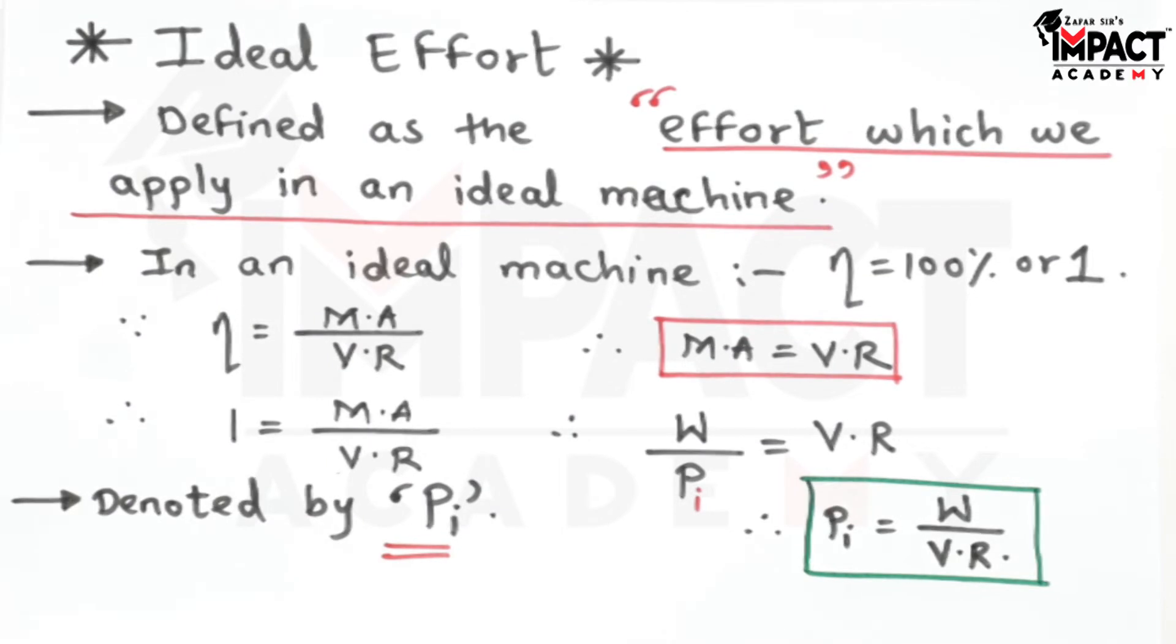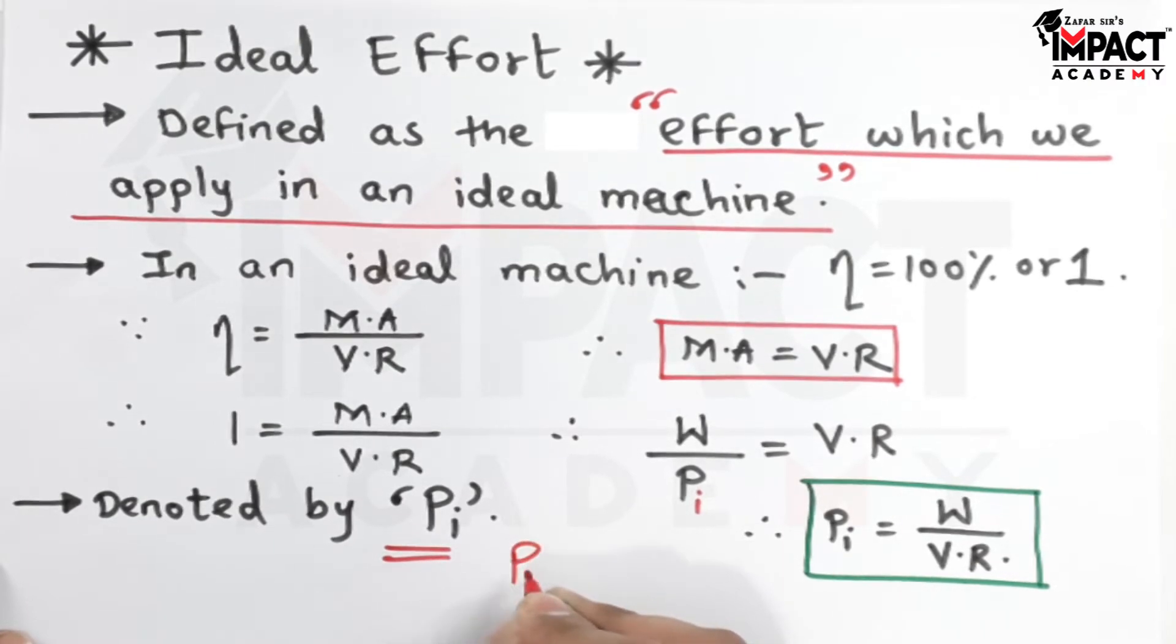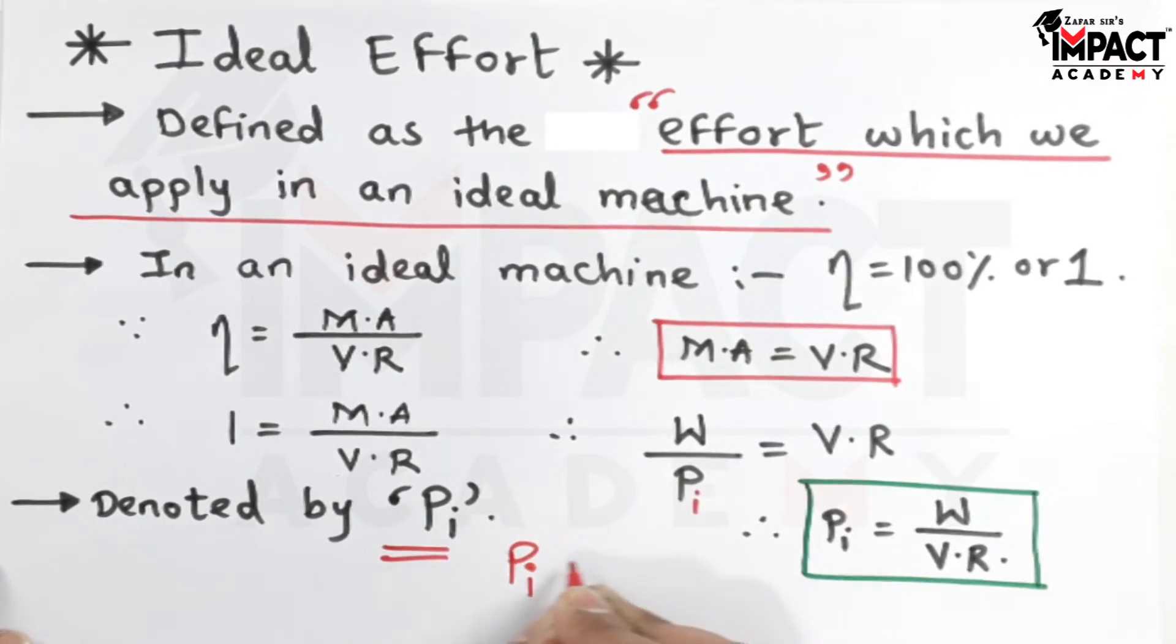This is the formula for ideal effort in case of an ideal machine in which friction is absent. When friction is absent in an ideal machine, this ideal effort Pi will be less